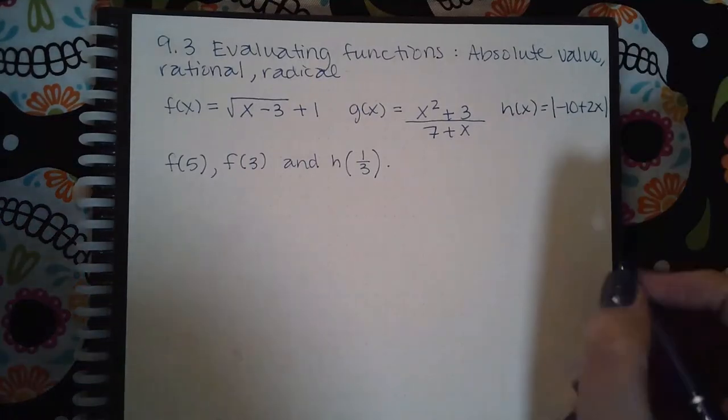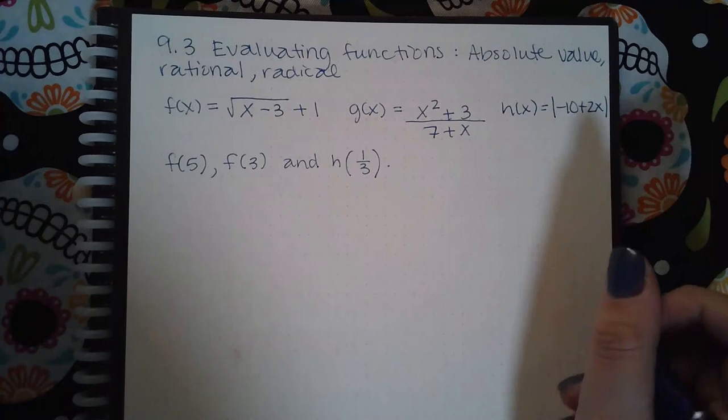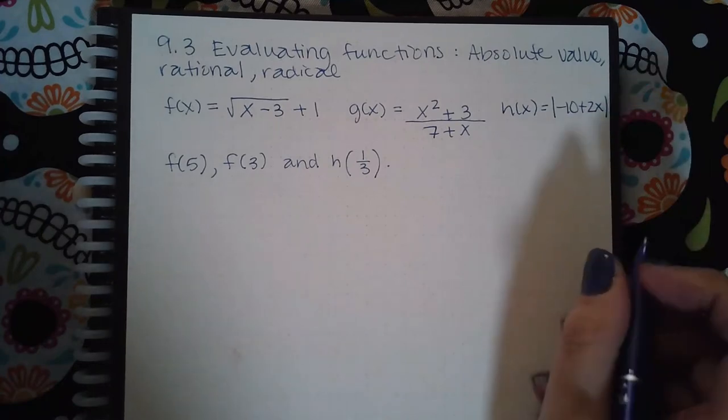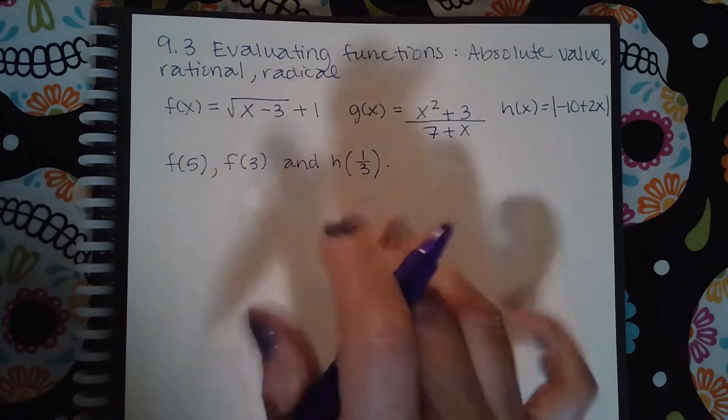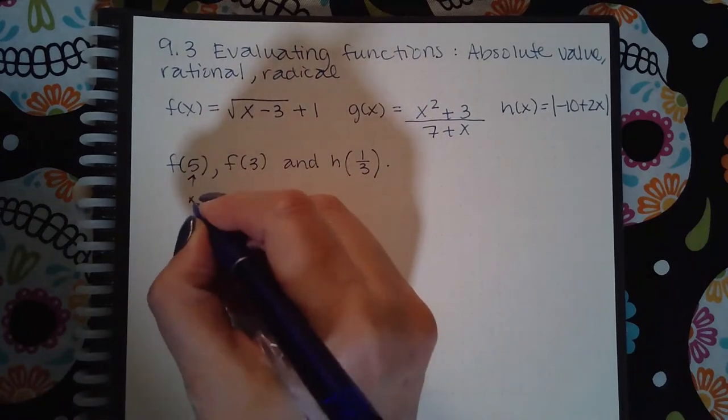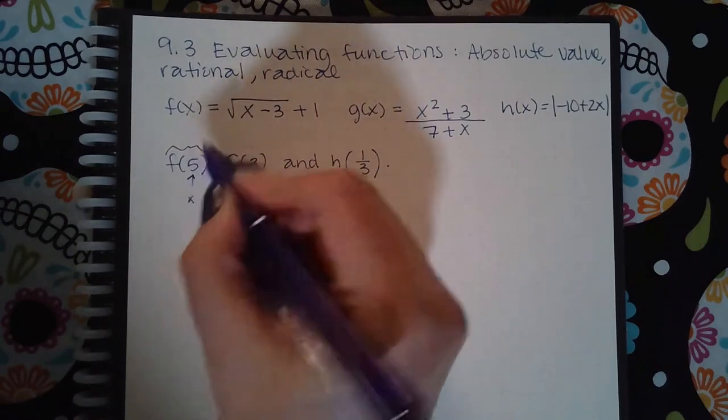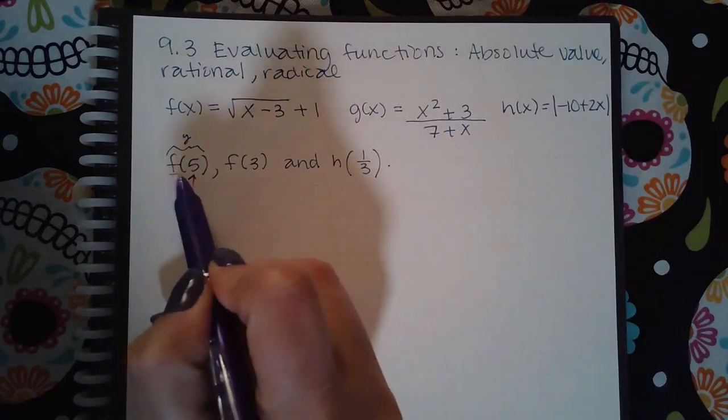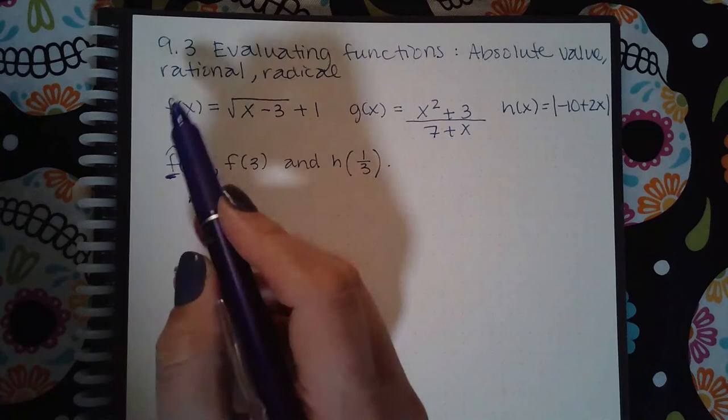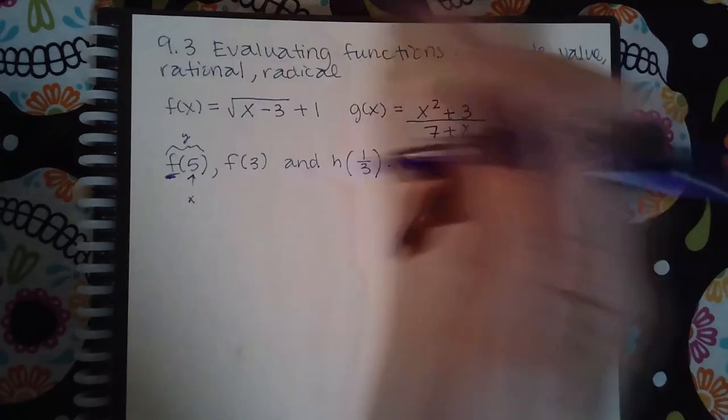We have 9.3 evaluating functions: absolute value, rational, and radical. No matter what the function looks like, when they give us this notation, this used to be the x and what they're asking us to find is the y. You're going to use the letter on the outside to decide which function we should be using.